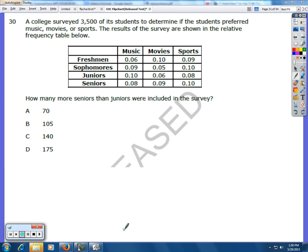This is the sixth video installment in the EOC Math 1 released exam starting with number 30. A college surveyed 3,500 of its students to determine if the students preferred music, movies, or sports. The results of the survey are shown in the relative frequency table below. How many more seniors than juniors were included in the survey?